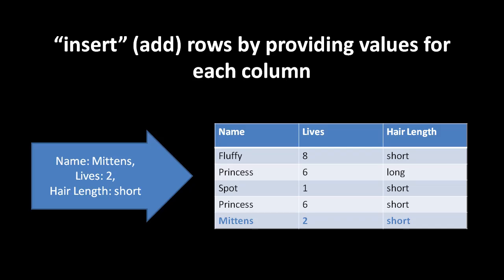We've covered all the core concepts of querying data, but what about actually adding data into the database or updating and manipulating data? When it comes to adding a row to a table, this is called an insert operation. To insert a new row, you have to provide a value for each column. Here in our cats table, we're inserting a new row with a name value of 'mittens', a lives value of two, and a hair length of 'short'.